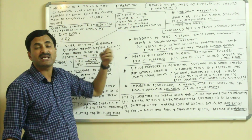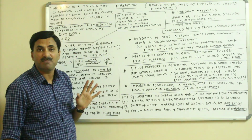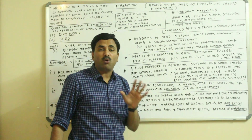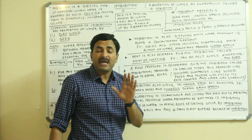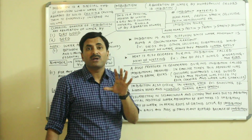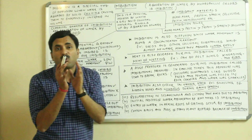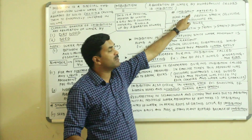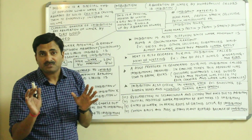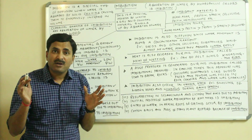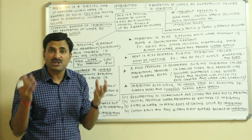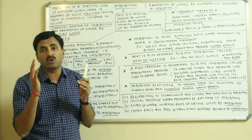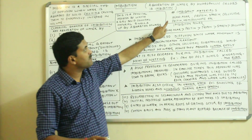All these three definitions are various ways to explain the concept of imbibition. Now the question arises: all substances do not show imbibition, so which substances do? There are special colloidal substances — imbibent materials — which show imbibition. There are a few substances which show imbibition largely and a few which do not show imbibition well.